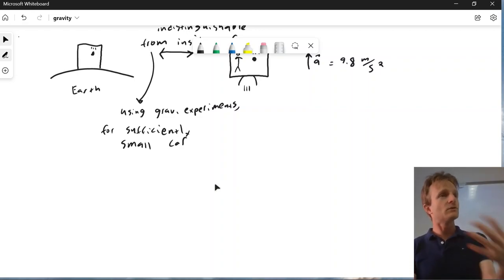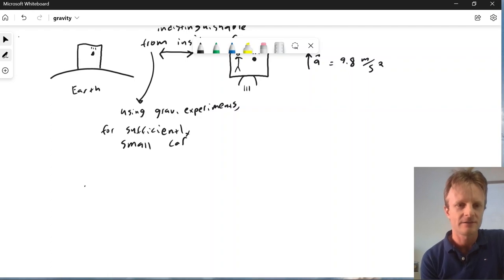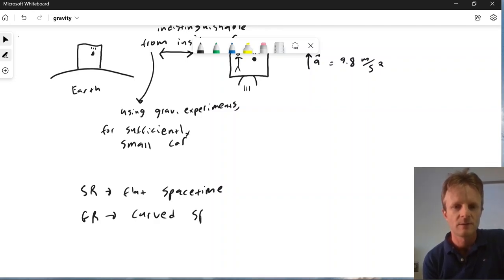if special relativity is just flat space-time and general relativity, the theory of gravity, is going to reduce to special relativity locally, well, what reduces to something flat locally? Well, something curved, right? We're on the curved surface of the Earth and it looks flat because we only can see locally. And that's really the big idea.